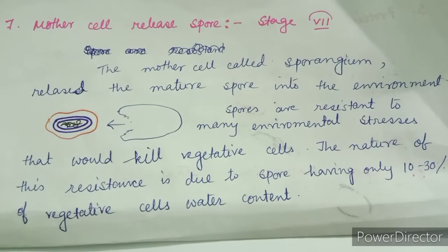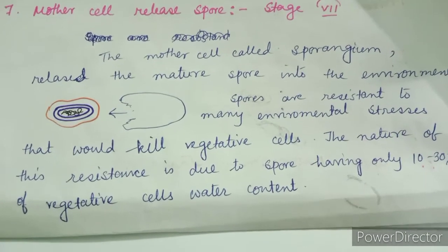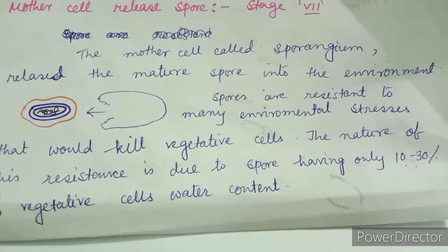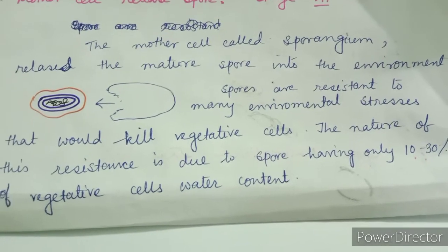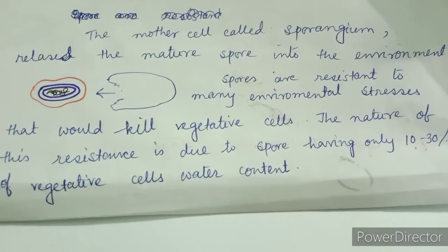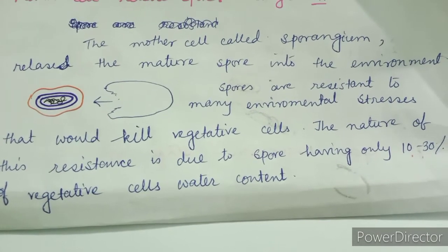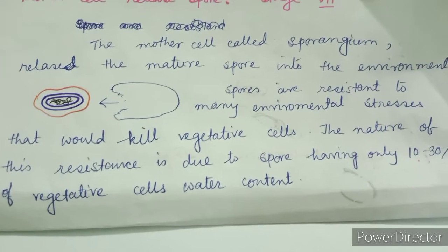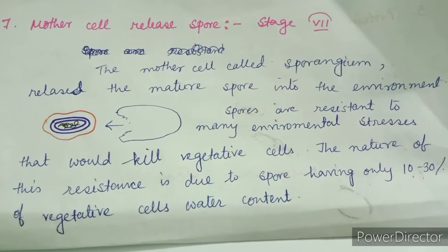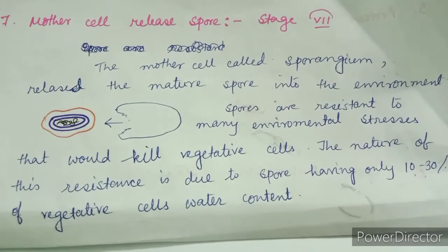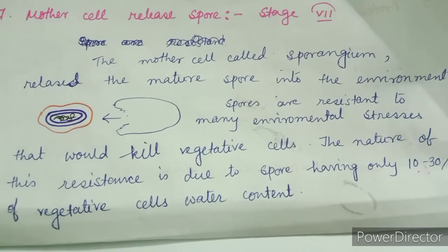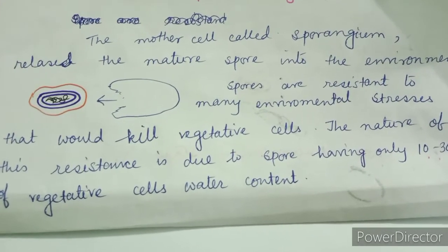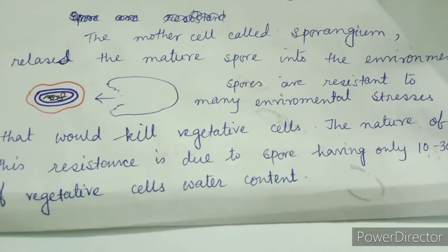The final step is mother cell release of spore, Stage 7. The mother cell, called the sporangium, releases the mature spore into the environment. Spores are resistant to many environmental stresses that would kill vegetative cells. This resistance is due to the spore having only 10–30% of the vegetative cell's water content. The mother cell wall bursts and the mature endospore is released into the environment, completing the seven steps of endospore formation.